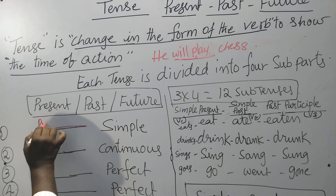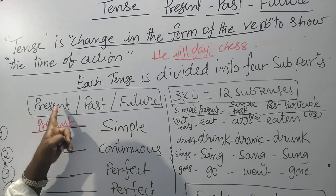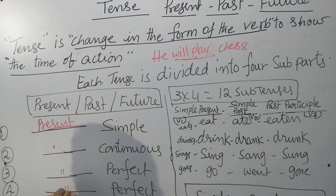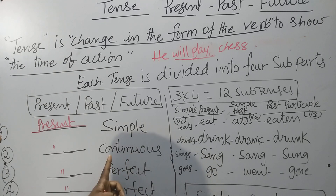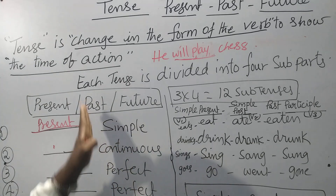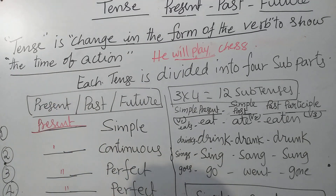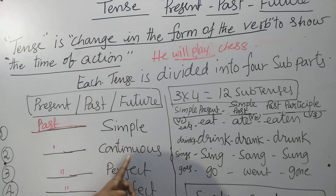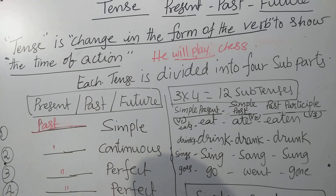Now, present tense — if you write 'present' before each, it will become the four sub-parts of present: present simple, present continuous, present perfect, present perfect continuous. These are the four sub-parts of present tense. Now, past tense: past simple, past continuous, past perfect, past perfect continuous — these are the four sub-parts of past tense.